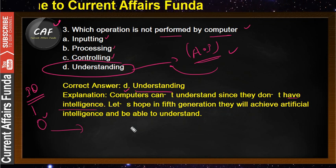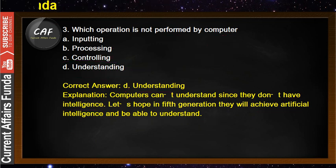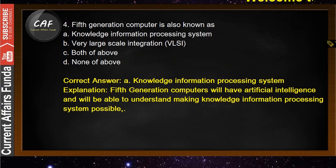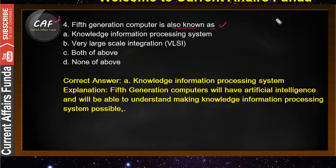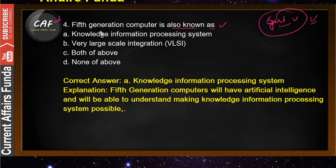Let's hope the fifth generation achieves artificial intelligence and computers will be able to understand. Now let's move to problem number 4. The question asks: the fifth generation computer is also known as what? This quiz is definitely based on generations of computers. The fifth generation computer is also known as the Knowledge Information Processing System (KIPS).